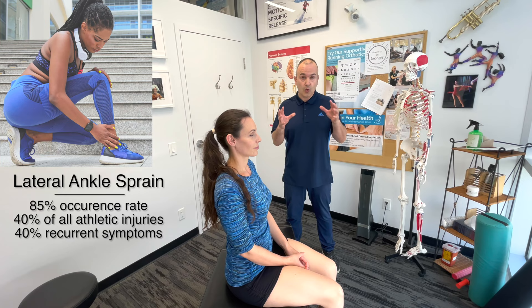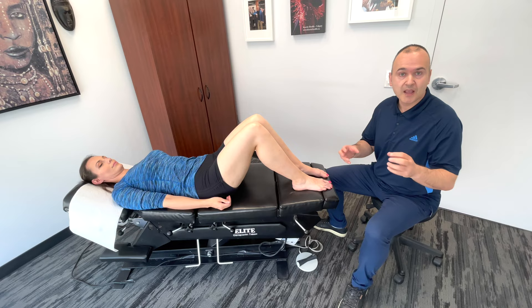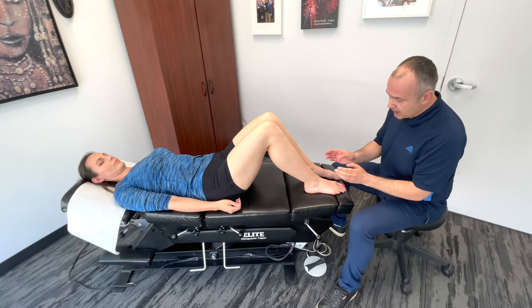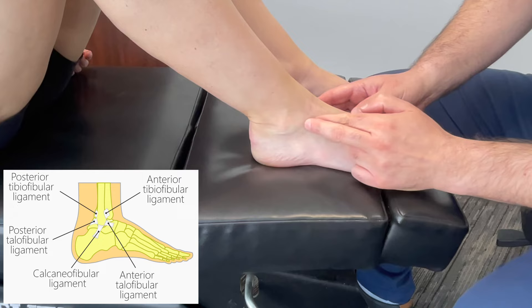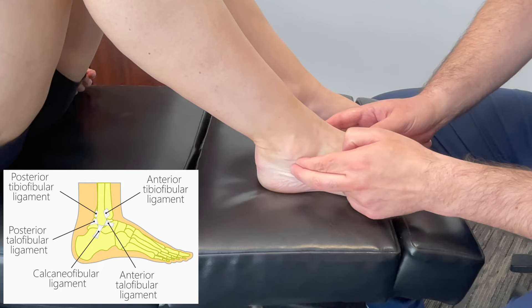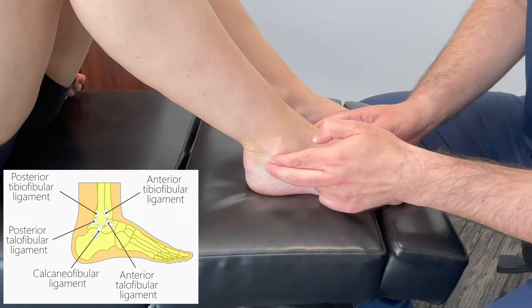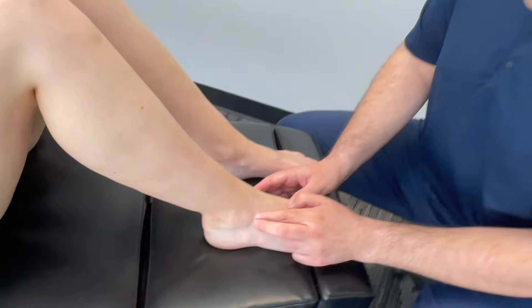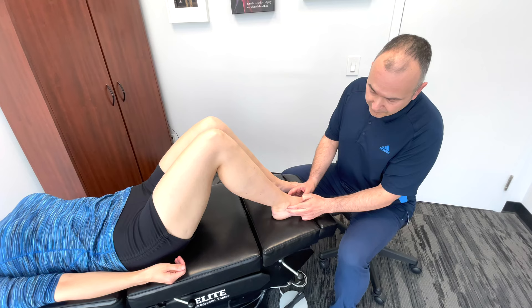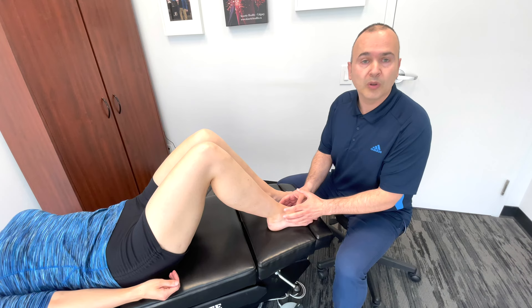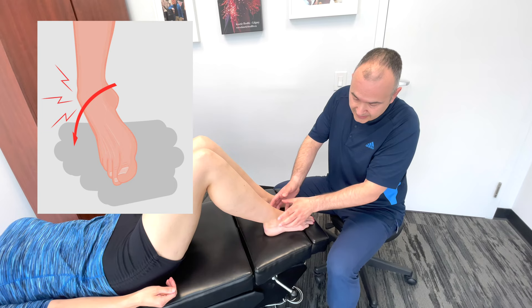The first part of the examination will be palpation of key anatomical structures. Starting with three main ligaments on the lateral aspect of the ankle: the anterior talofibular ligament (ATFL), which runs in this direction; the calcaneal fibular ligament (CFL), which runs this way; and the posterior talofibular ligament (PTFL), which runs posterior at a slight angle. The most commonly injured is the ATFL, secondly the CFL, and lastly the PTFL. If the CFL and ATFL are both damaged, that creates considerable instability, occurring with a plantar flexed, adducted, and slightly supinated position — an inversion ankle sprain.